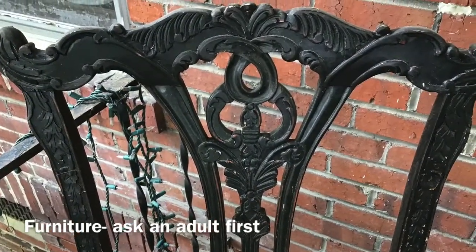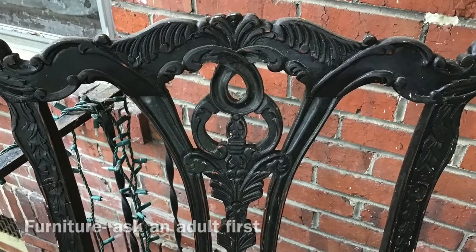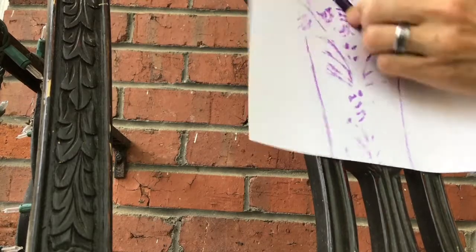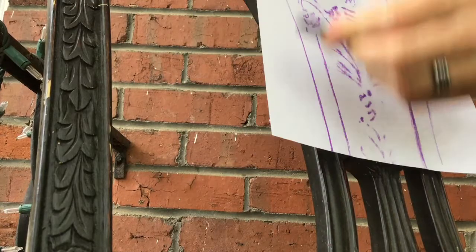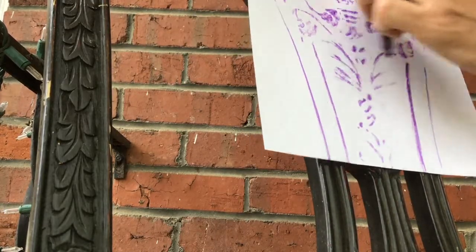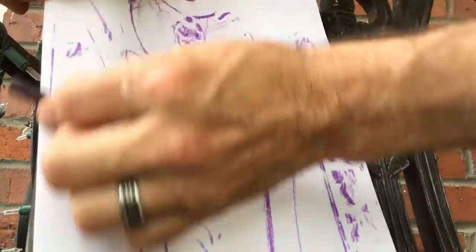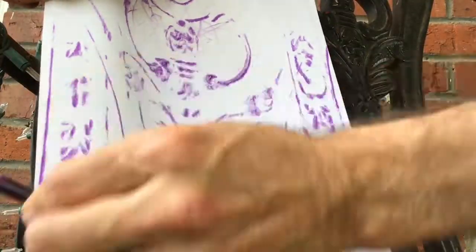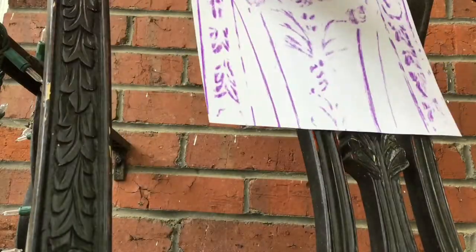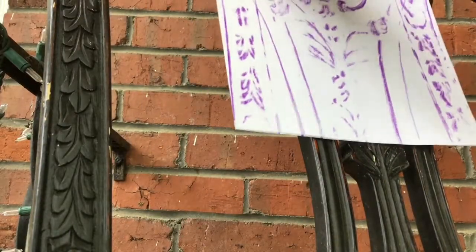Now when you're gonna do furniture, if you like, this is carved furniture, it's got some great textures on it. Ask an adult first before you do it, they might not want you to get crayon all over the furniture. So just check with somebody first. But if it's okay, go ahead and make your rubbings. I got some really cool patterns off of this. Look at that carved texture.